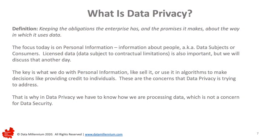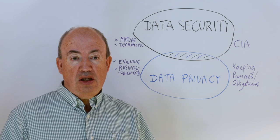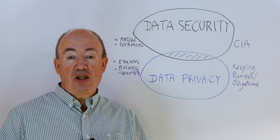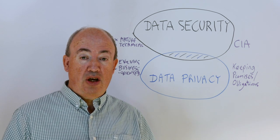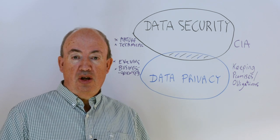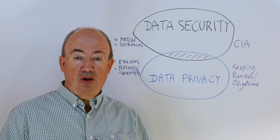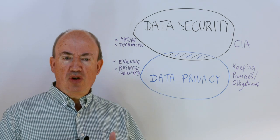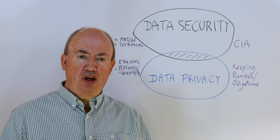What is data privacy? Our definition of data privacy is keeping the obligations the enterprise has and the promises it makes about the way in which it uses data. It's a broad definition — it covers more than personal information; it will also cover license data, being data that's subject to contracts, maybe purchased from data vendors. But at the present moment, personal information is what data privacy is most concerned about, and data privacy really does focus on usage and processing of data.